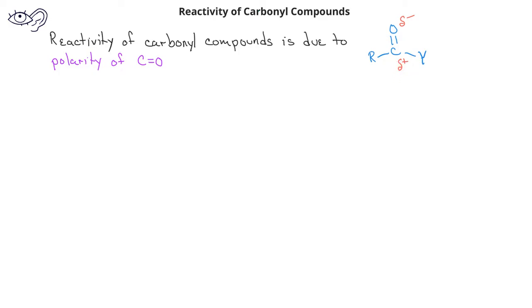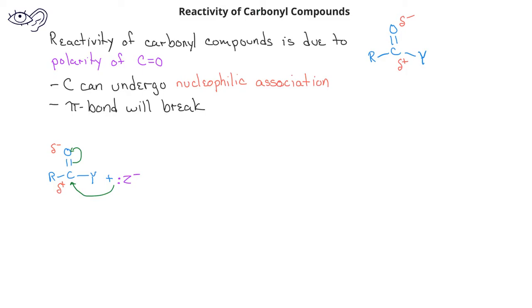Therefore, the carbon can undergo nucleophilic association and the pi bond will break and we'll get a tetrahedral intermediate forming. Once we have the tetrahedral intermediate, there's different things that can happen depending on which type of carbonyl compound we have.